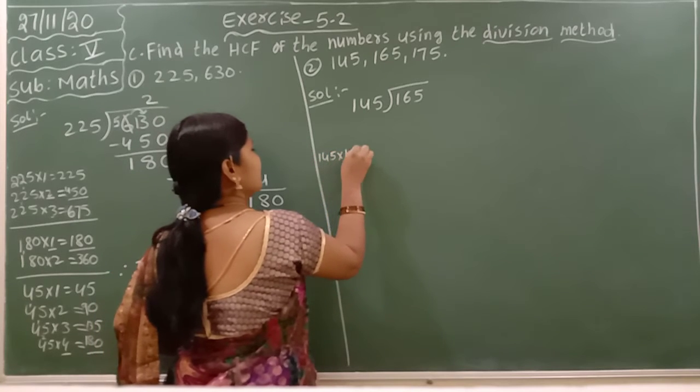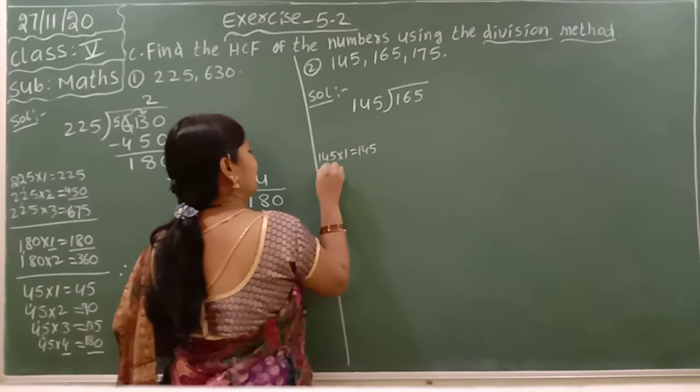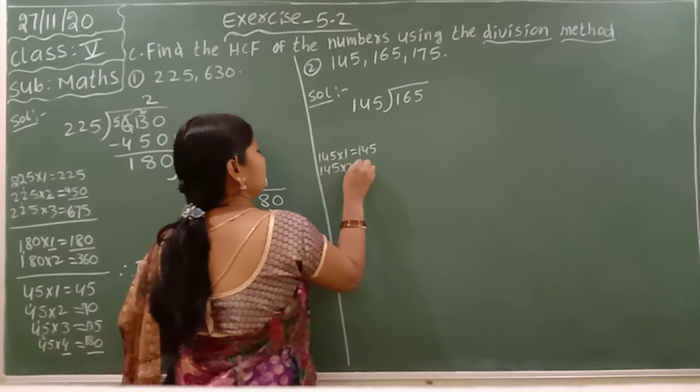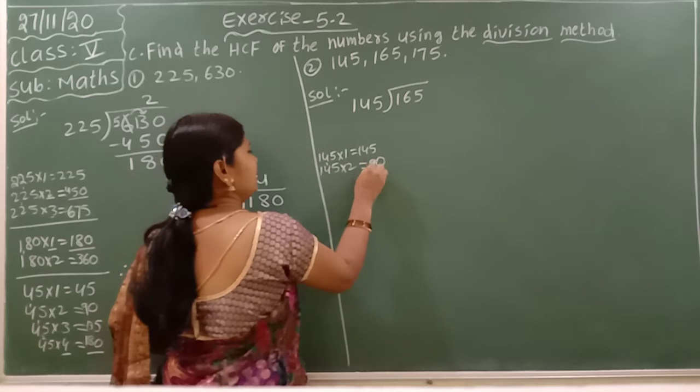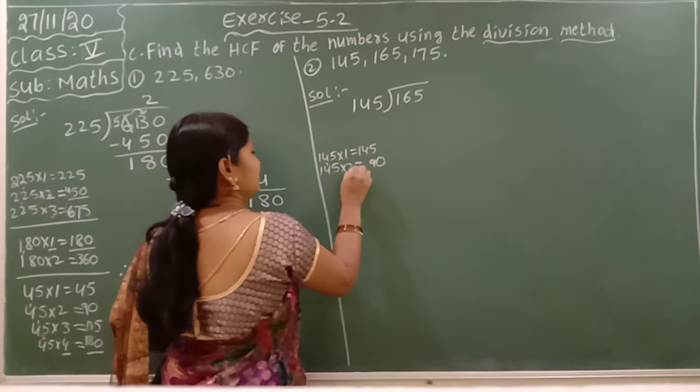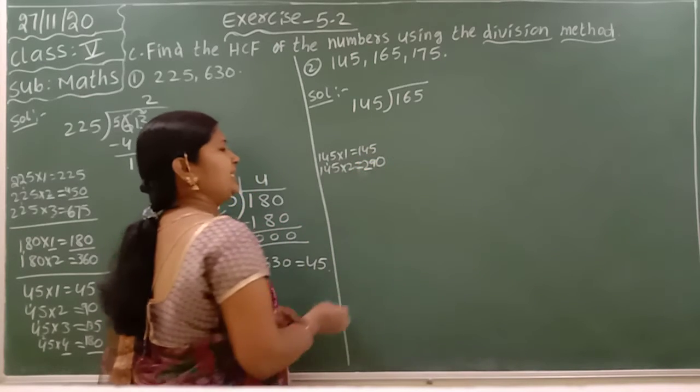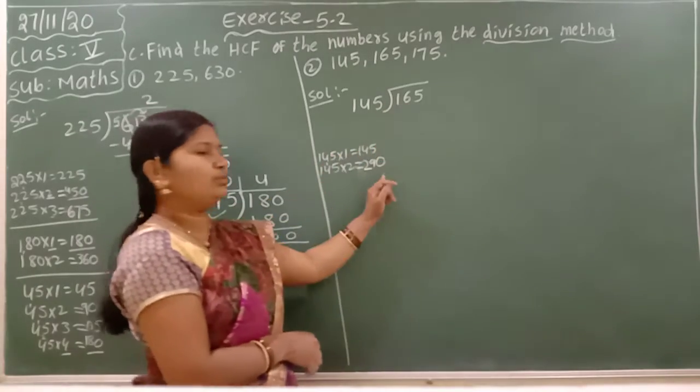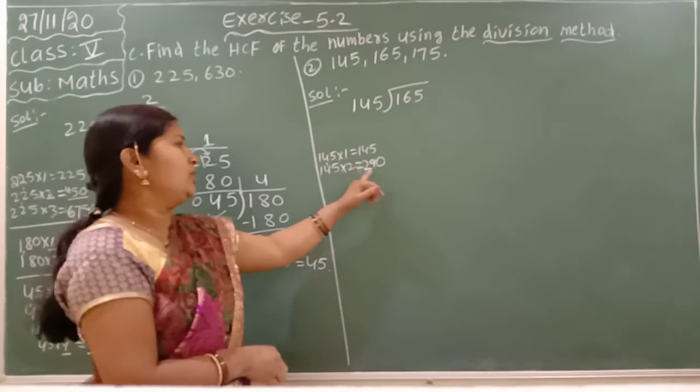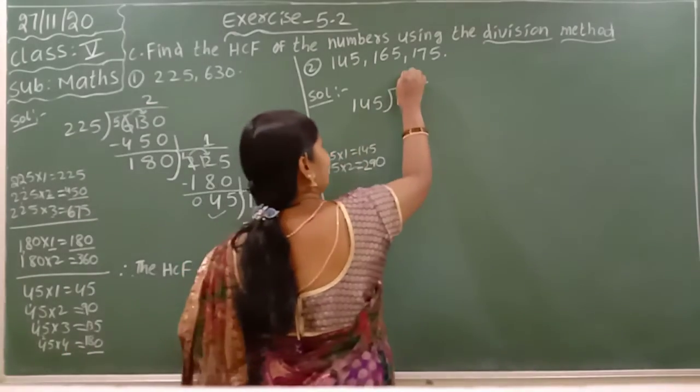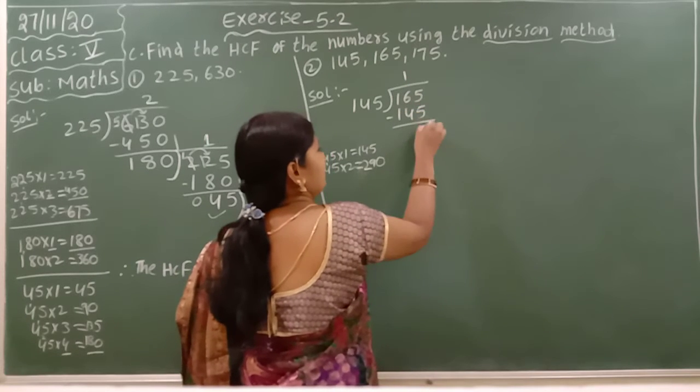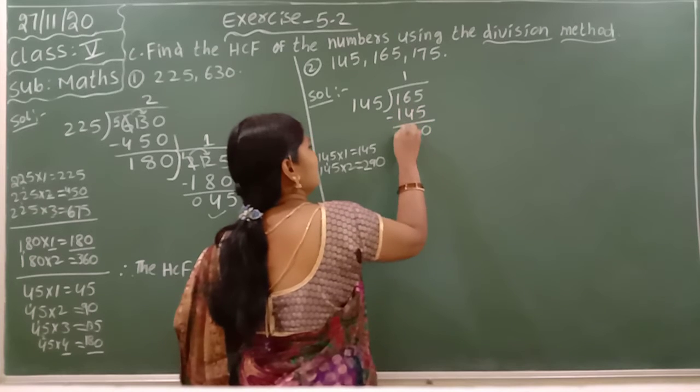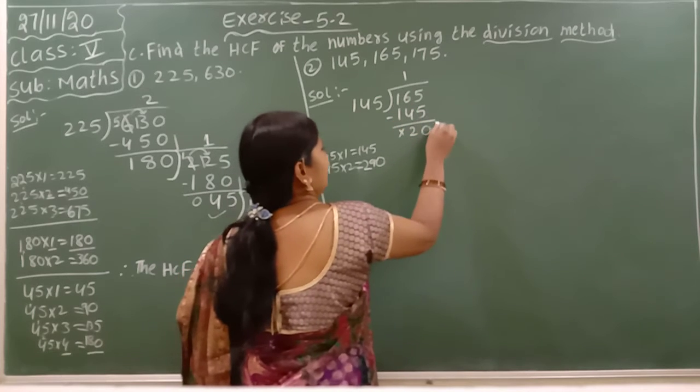Here, 145 times 1 is 145. 145 times 2 is 290 (2 times 5 is 10, 2 times 4 is 8 plus 1 is 9, 2 times 1 is 2). Compared to 165, 290 is the big number, so you should take 145 times 1, which is 145. Minus: 5 minus 5 is 0, 6 minus 4 is 2, 1 minus 1 is 0.